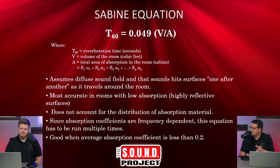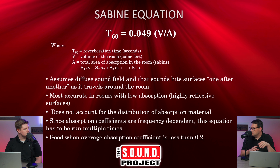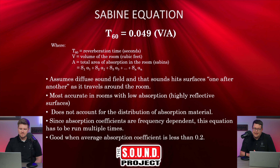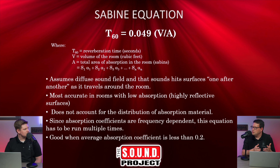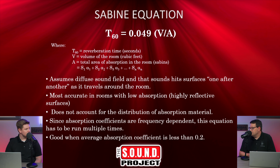That 0.049 is just a constant Sabine came up with in figuring out and developing this equation. Then we have volume, which you can measure in a room, and the total area of absorption — that's every surface in the room multiplied by its absorption coefficient, all added together. It's a pretty simple equation with just a few variables to figure out.